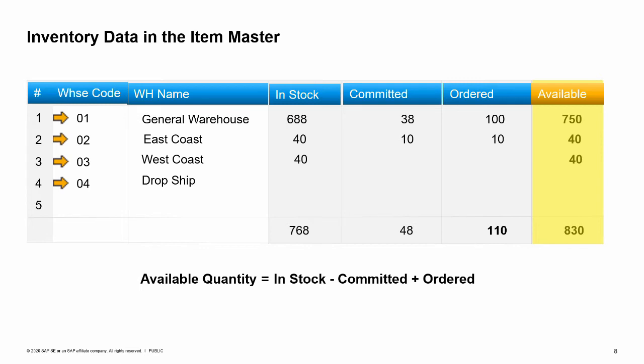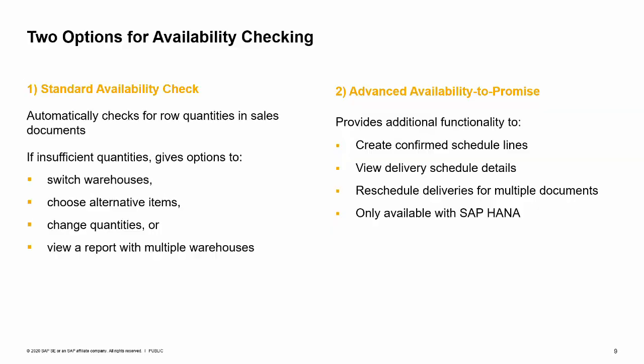Finally, it shows the available quantity, which is the quantity available for your sales orders. Two options exist for availability checking. You can choose only one option: either the standard availability check for SAP Business One or an advanced availability to promise check.